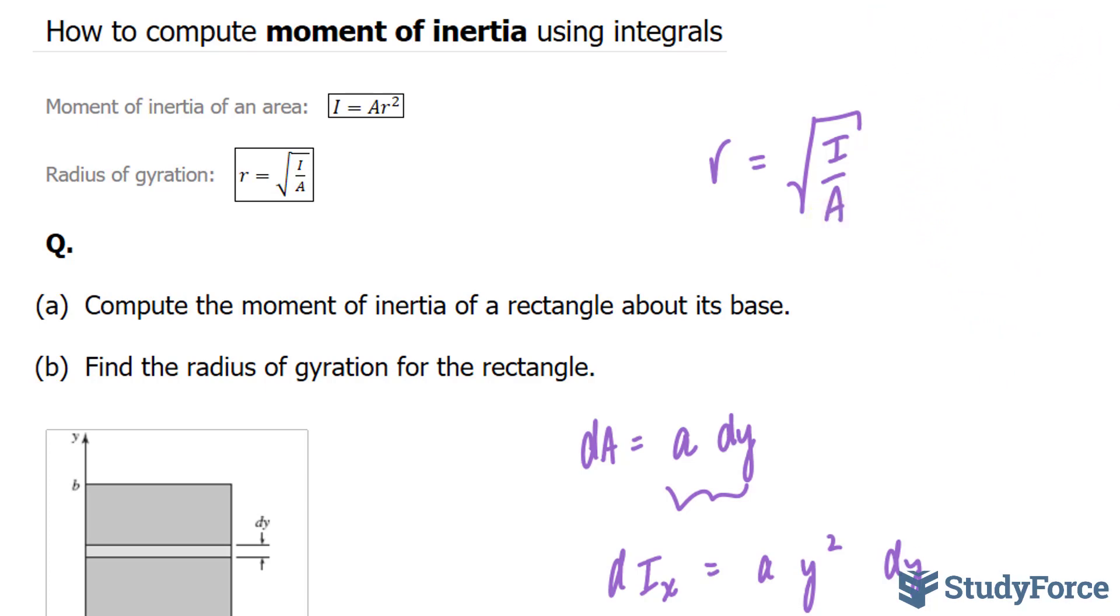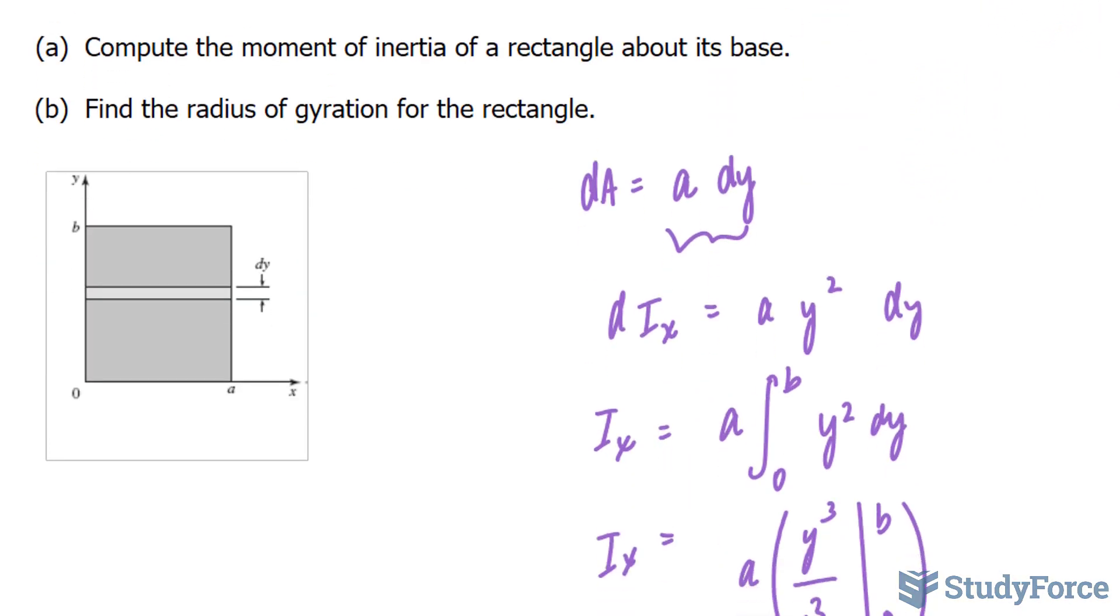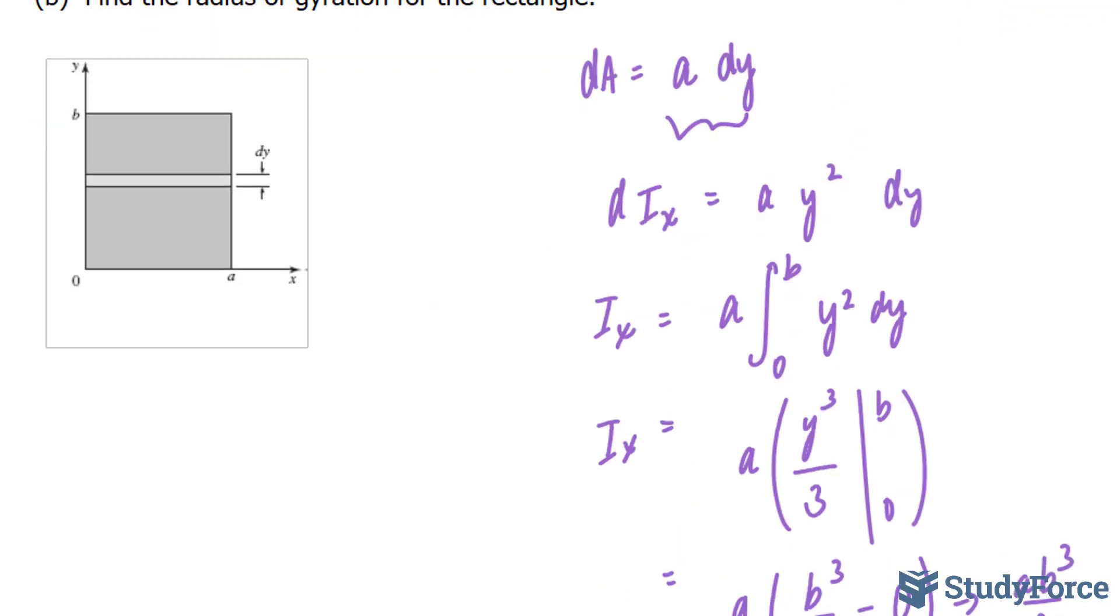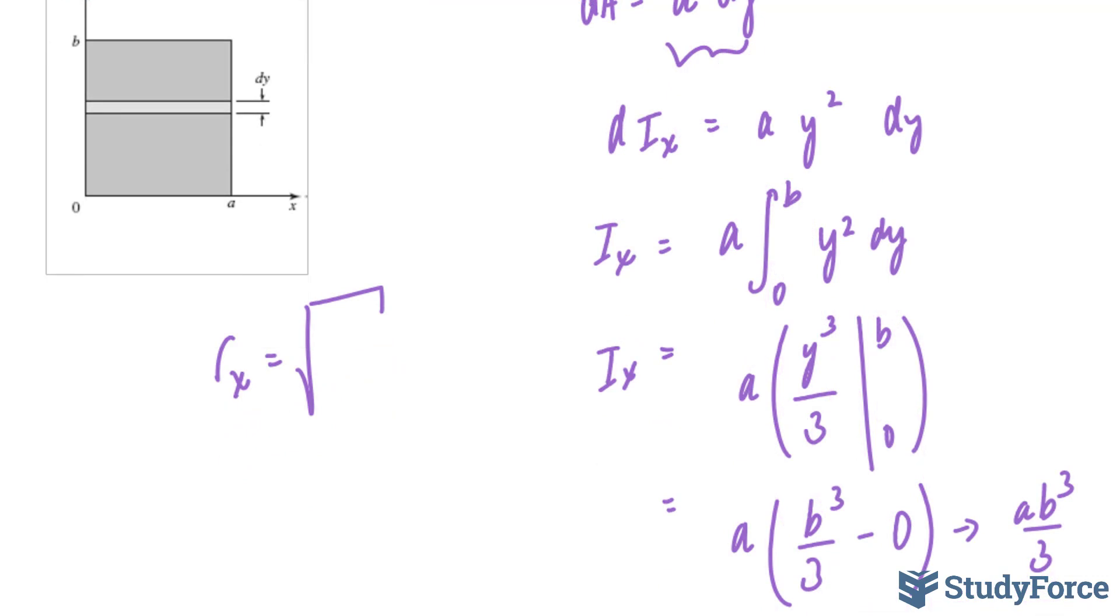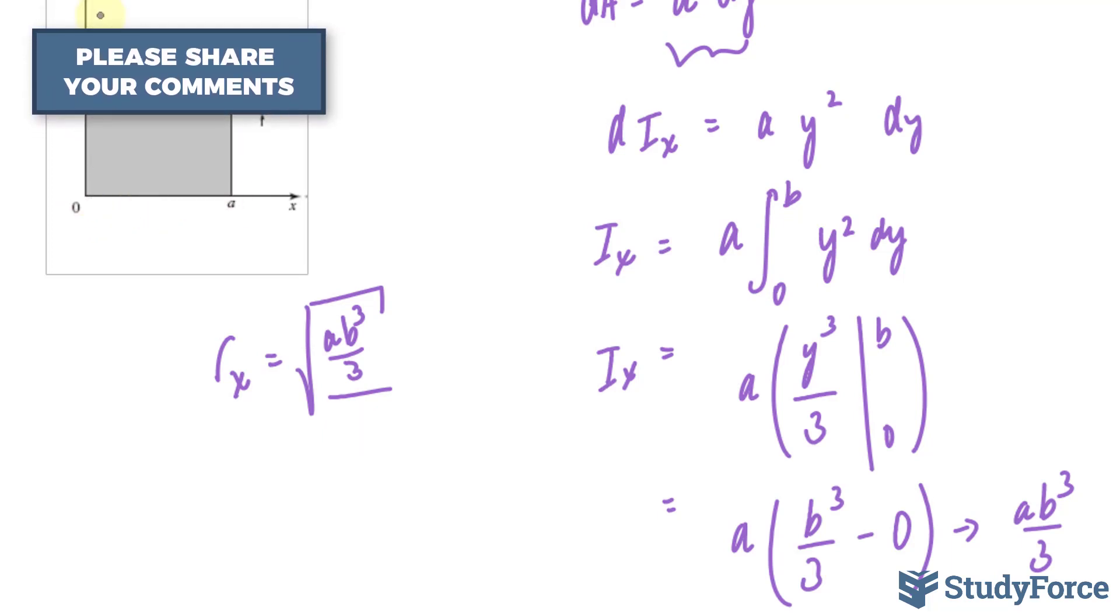So, since we are finding the moment of inertia along the x axis, we will write down rx, r subscript x, square root of our moment of inertia, which is this, ab to the power of 3 over 3, over the area of the whole figure, which happens to be a times b, length times width. Because this time we are taking the area of the total figure.